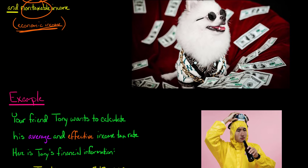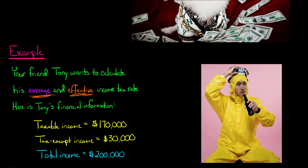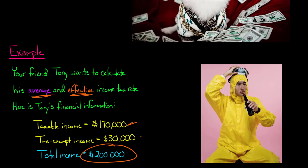Let's do an example. Say your friend Tony wants to calculate his average tax rate and his effective income tax rate. He has taxable income of $170,000, plus tax-exempt income — income not subject to income tax — of $30,000. So his total income, both taxable and non-taxable, is $200,000.